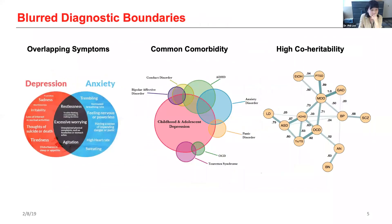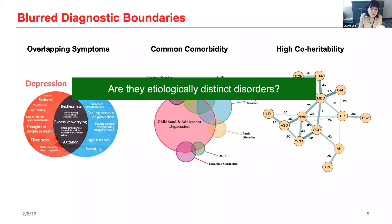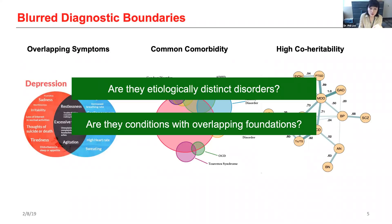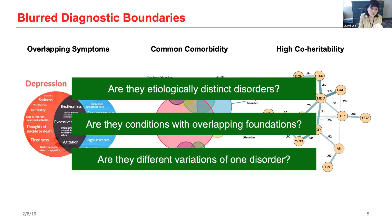Thomas Insel, the former director of the NIMH, has illustrated this issue very vividly in this quote. Basically, while DSM has been described as a Bible for the field, it is at best a dictionary. DSM diagnoses are based on consensus about clusters of clinical symptoms, but not any objective laboratory measure — the rest of medicine would be equivalent to creating diagnostic systems based on the nature of chest pain or the quality of fever. Indeed, decades of epidemiologic studies also report that diagnostic boundaries between psychiatric disorders are not clear at all, with overlapping symptoms frequent among patients, and we also observe this massive comorbidity and high co-heritability for distinct psychiatric disorders. So naturally, questions arise about whether these clinically distinct disorders have etiologically distinct bases.